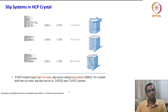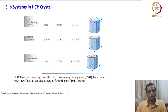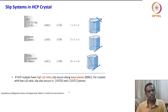The pyramidal planes with the same ⟨11 2̄ 0⟩ direction give 6 slip systems. So in HCP there are about 12 slip systems in total. However, HCP is very sensitive to the c/a ratio. If HCP crystals have a high c/a ratio, slip occurs along basal {0001} planes.